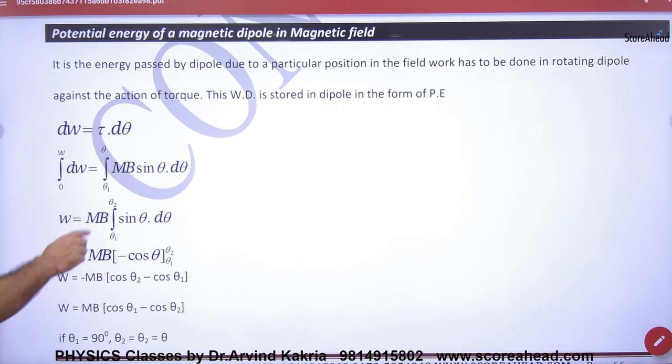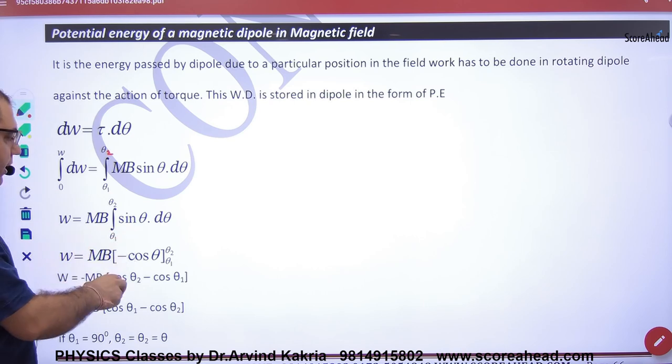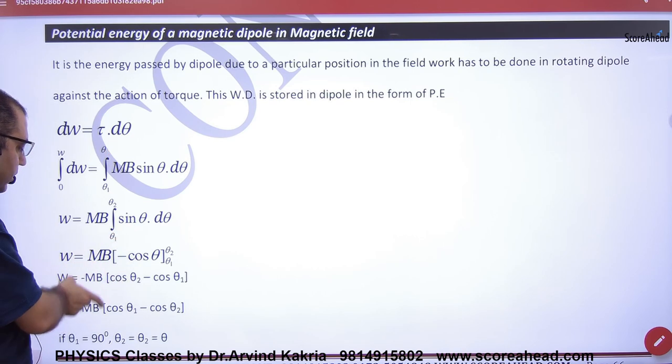So, remember how did you take the dipole? Theta naught to theta. So, MB is common with sinθ integration. Minus cosθ. We will put the limit.